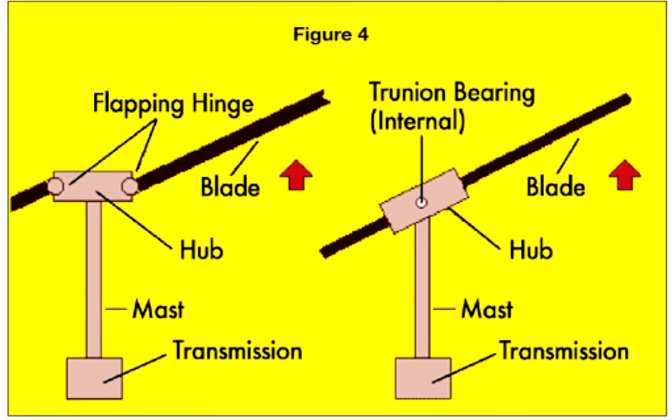Flapping is the movement of the blade relative to the ground — up or down. When the blade flaps up, it reduces the angle of attack and reduces some of the lift that blade is generating. And when the blade flaps down, it increases the angle of attack and increases the amount of lift that blade is generating. So what happens is, in the helicopter, your advancing side is going to flap up and the retreating side is going to flap down. This will try to equalize the amount of lift that each side is generating.